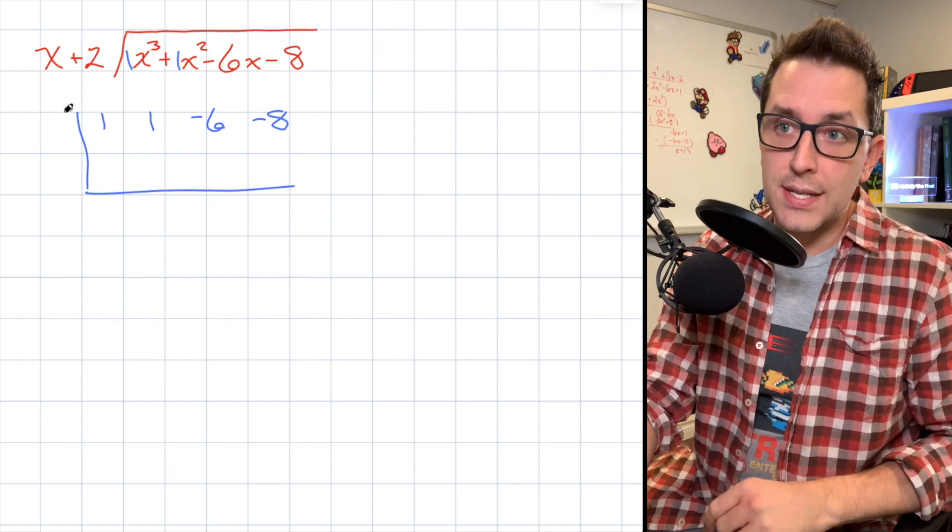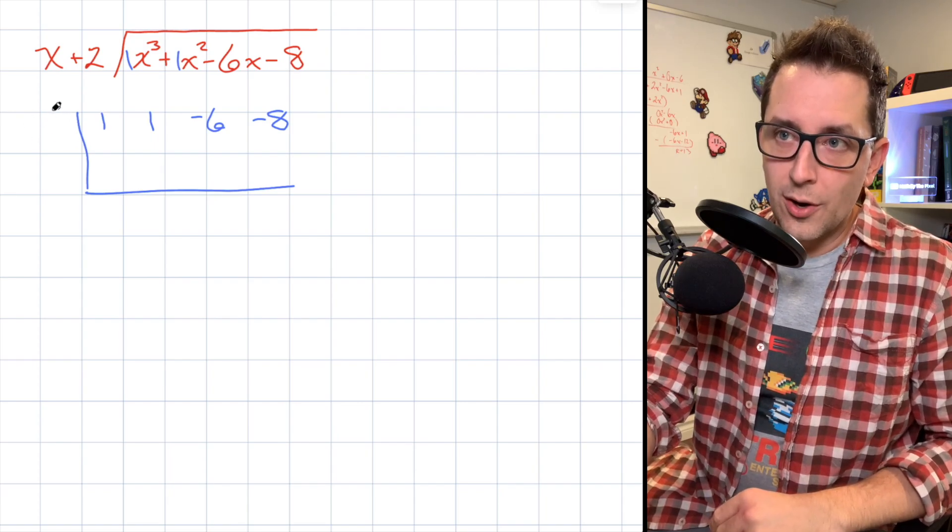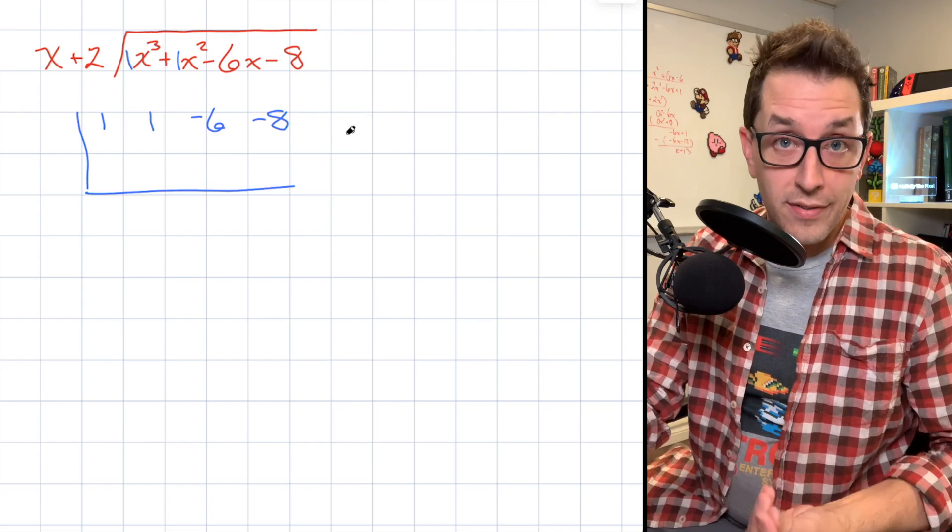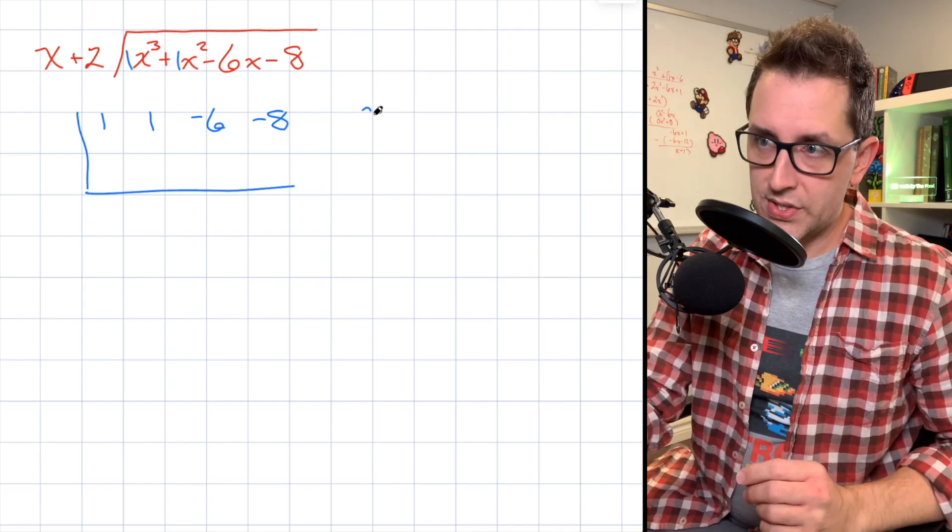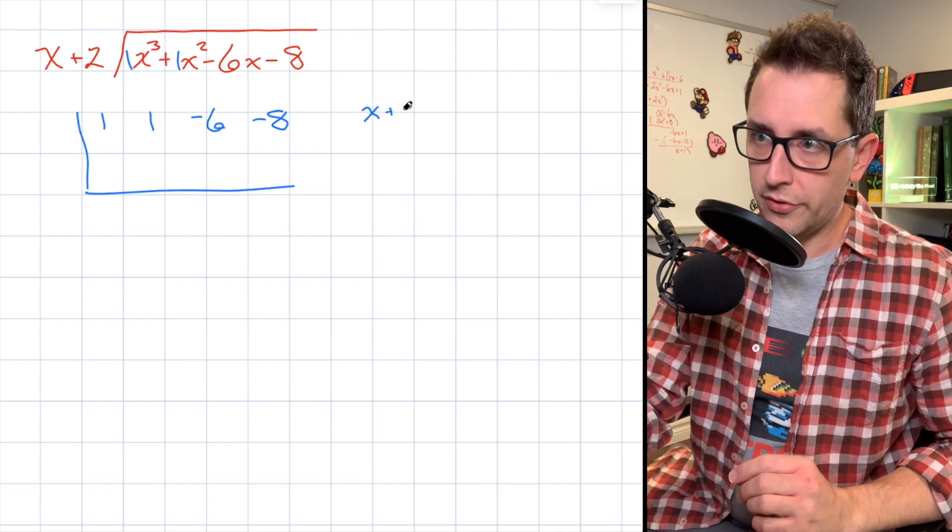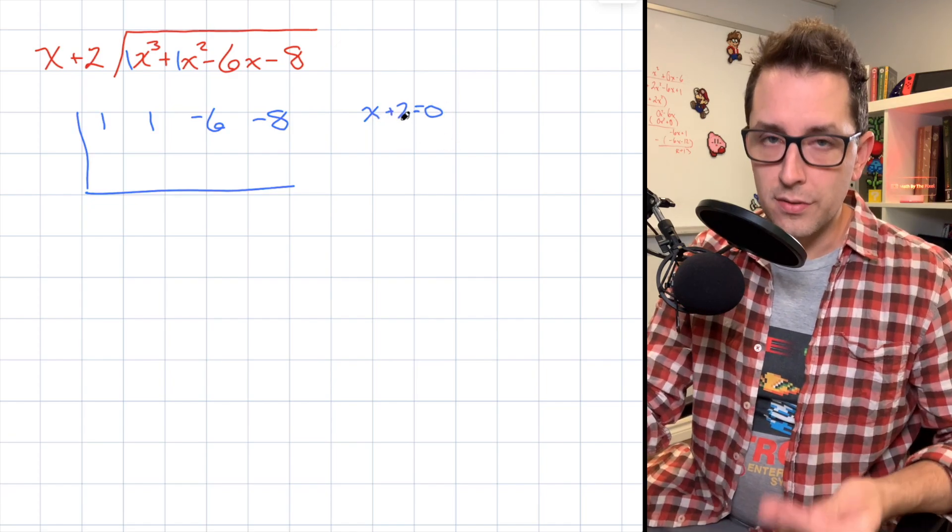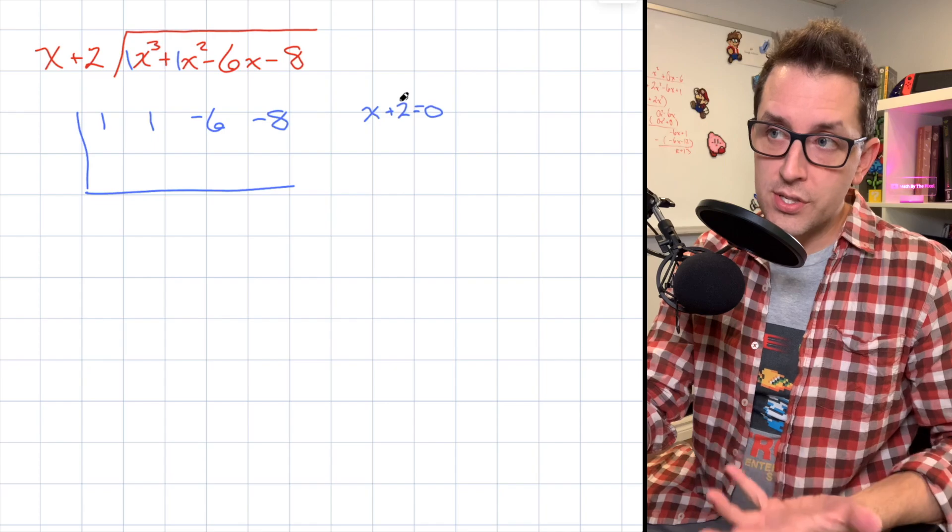Now, the next piece of information we need is something that's going to go on the outside of the L bracket right here. That piece of information is going to come from our divisor. In particular, we're going to set our divisor equal to zero in order to determine the value of x that makes that divisor equal to zero. Using some quick algebra here, just moving the 2 over to the other side, you can see that x = -2 is the value that will make that divisor equal to zero.